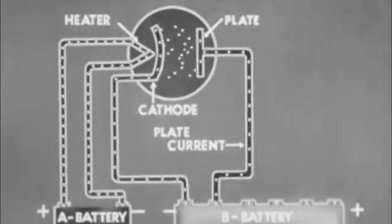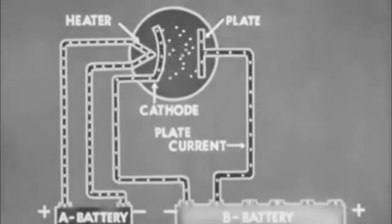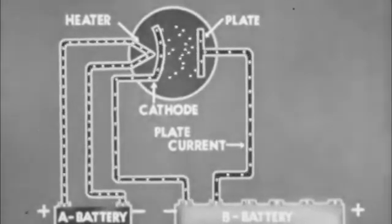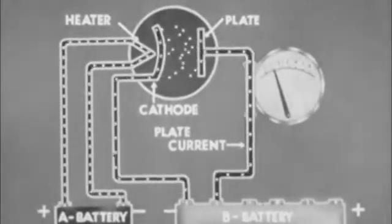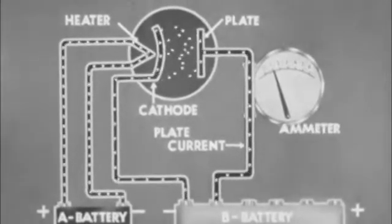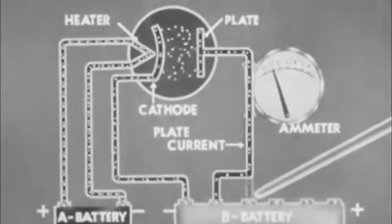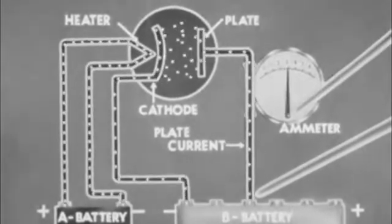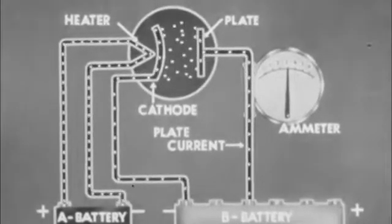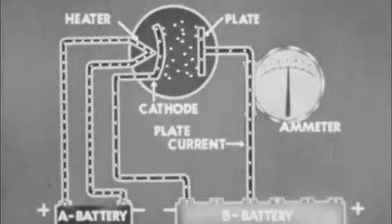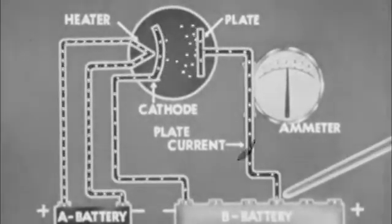This is plate current. This current may be measured by placing an ammeter in the circuit. If we increase the voltage on the plate, the ammeter shows an increase in current. Increasing plate voltage by another step leads to another increase in plate current.